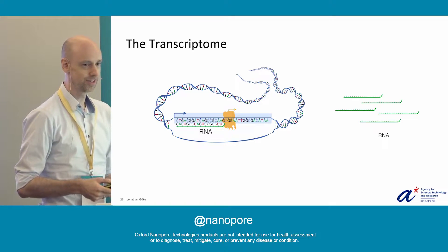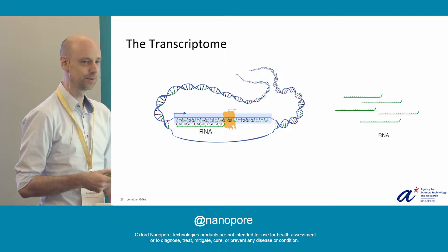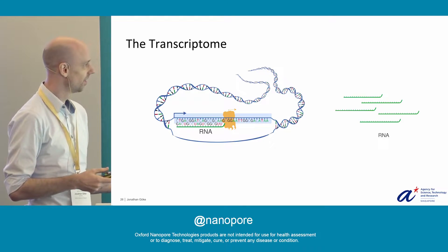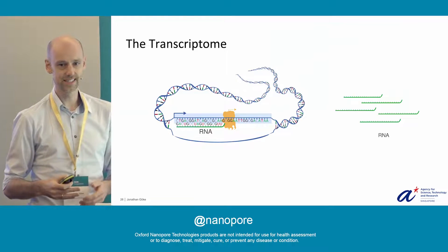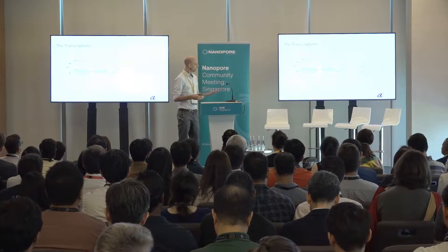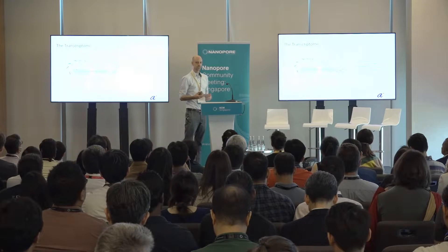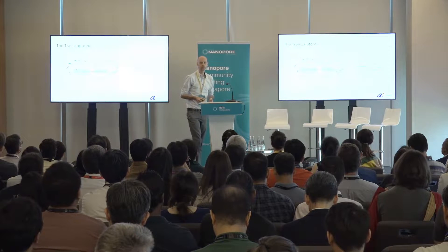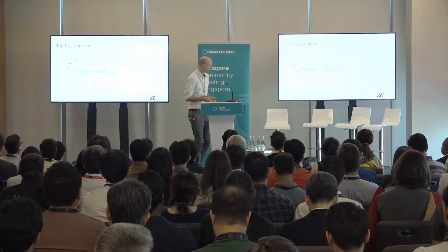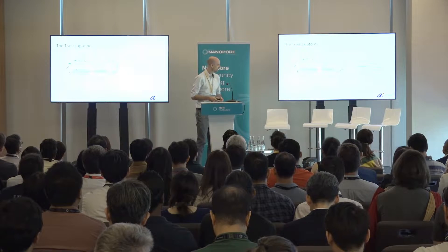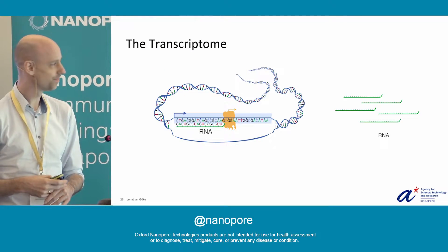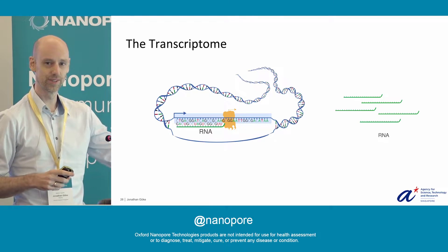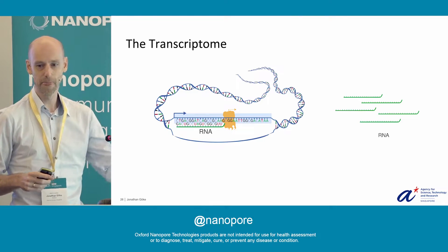The reason why we're interested in it is because there's such a complexity because of alternative splicing, start and end sites, that each gene can actually generate a lot of different versions of those RNAs. There's also a poster from my team, poster number one, talking a bit more about those aspects.